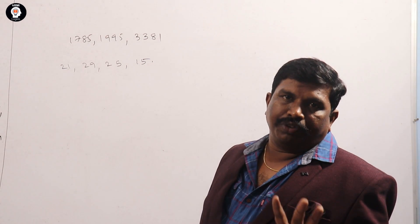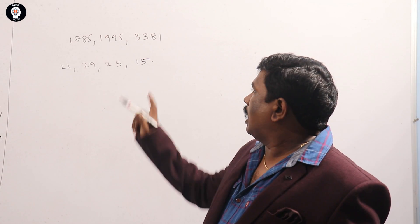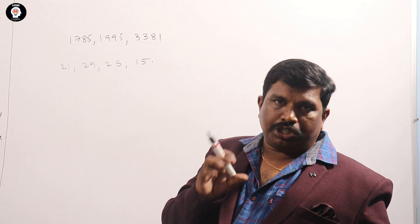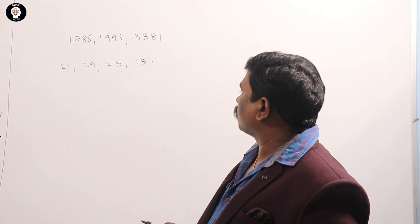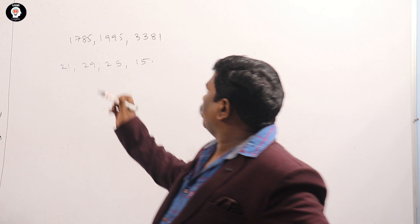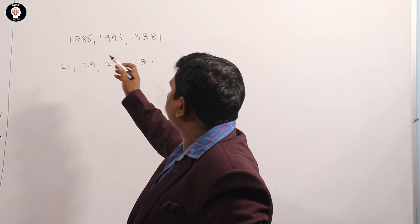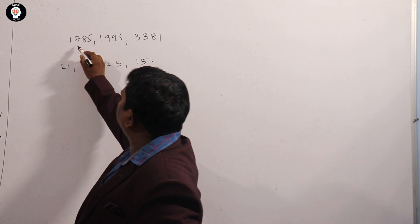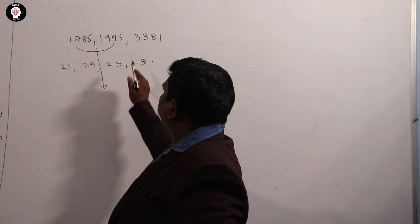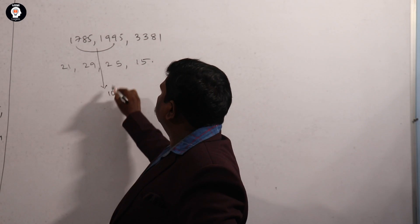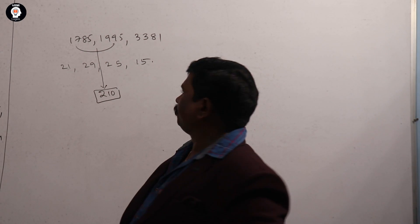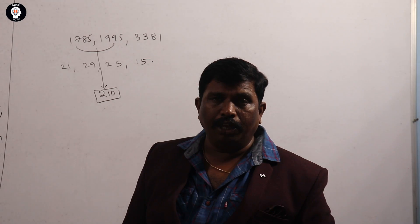We look at the minimum difference. The difference between 1785 and 1995: 95 minus 75 gives 10, and 191 minus 17 is 2, so 210. Now we check which option is a factor of 210. Obviously, 10 is not a factor here directly, so we check the next factor.